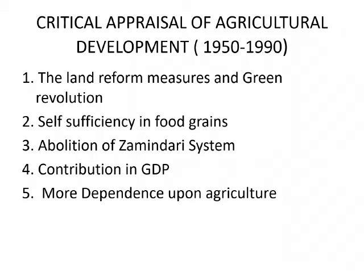Now we will discuss critical appraisal of agricultural development from 1952 to 1990. We have discussed land reforms, green revolution, and subsidies. Indian economy inherited a stagnant and backward agricultural sector from British rule. So, immediately after independence, the Indian government undertook various measures to improve the condition of agriculture. The land reform measures and the green revolution were the greatest achievements of the Indian government.